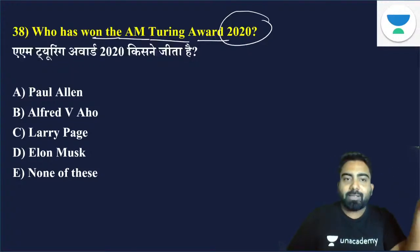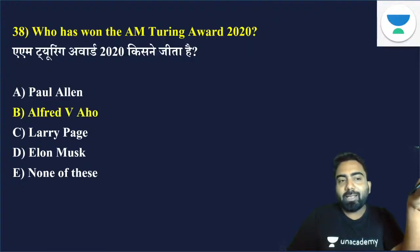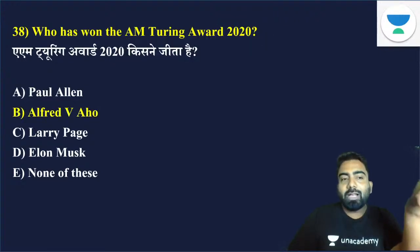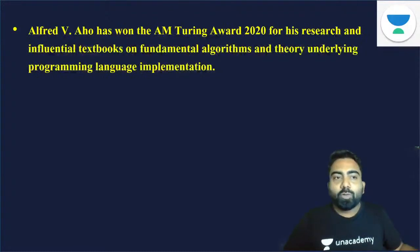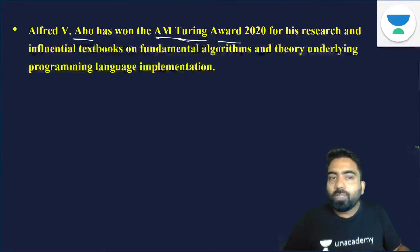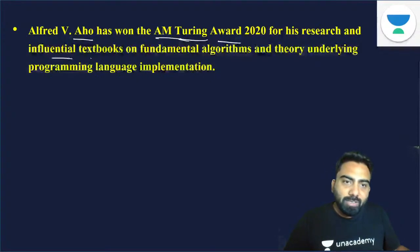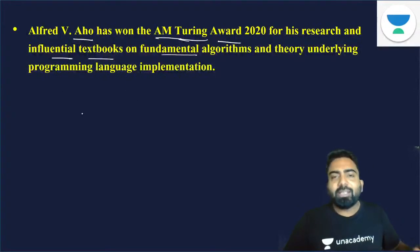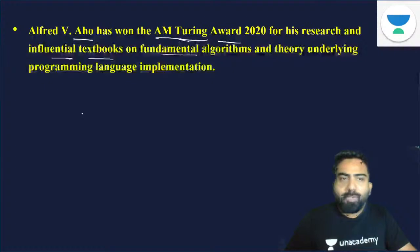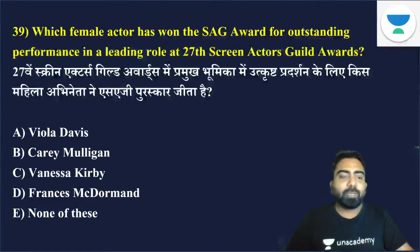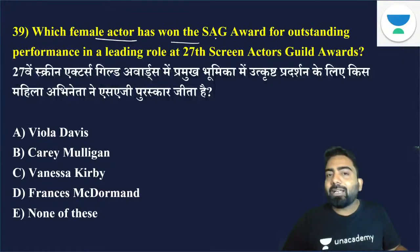Who has won the AM Turing Award 2020? The answer is Alfred V. Aho. Alfred V. Aho won the AM Turing Award for his research and influential textbook foundations. Basically, this award is given for contributions to computer architecture.